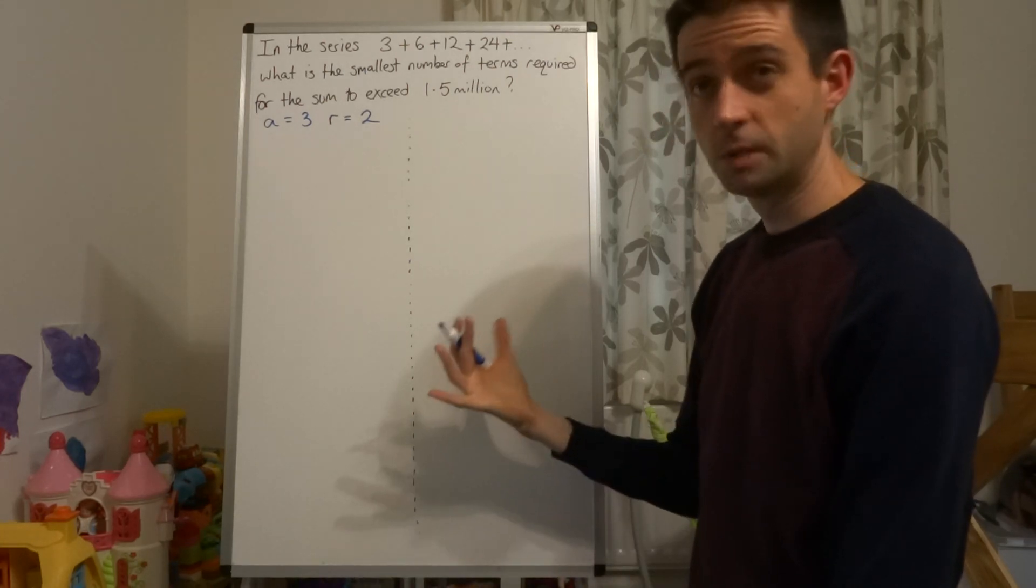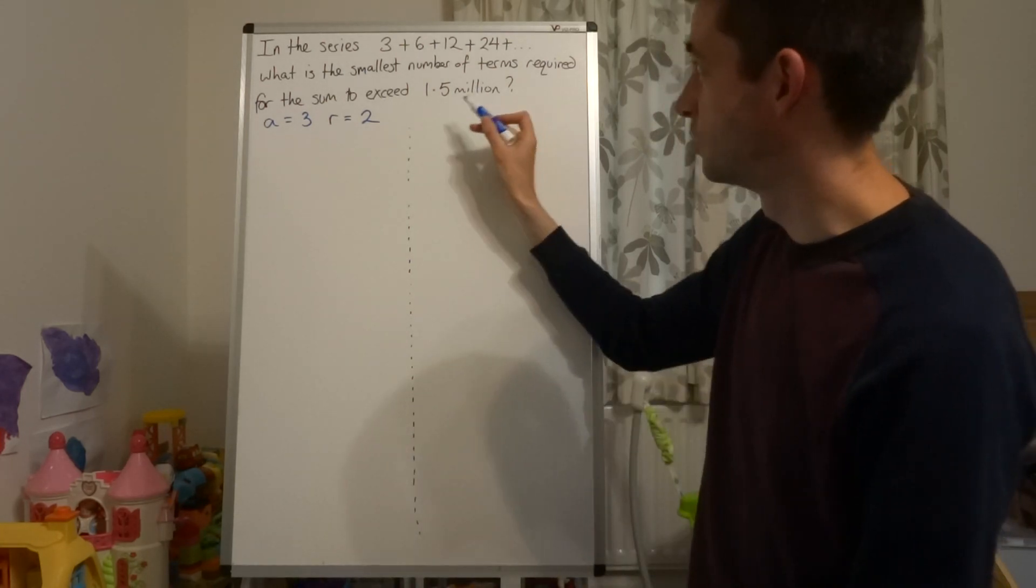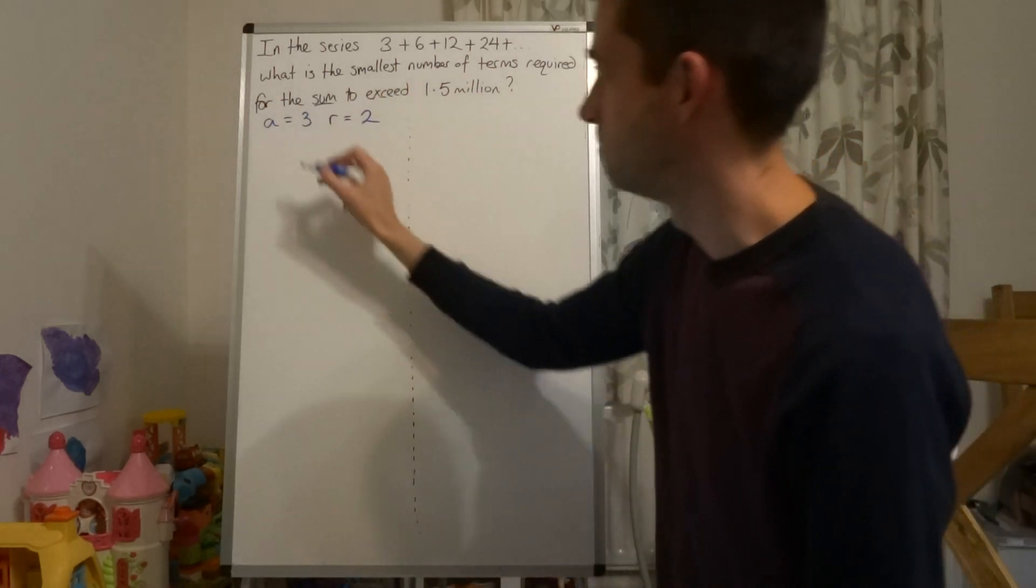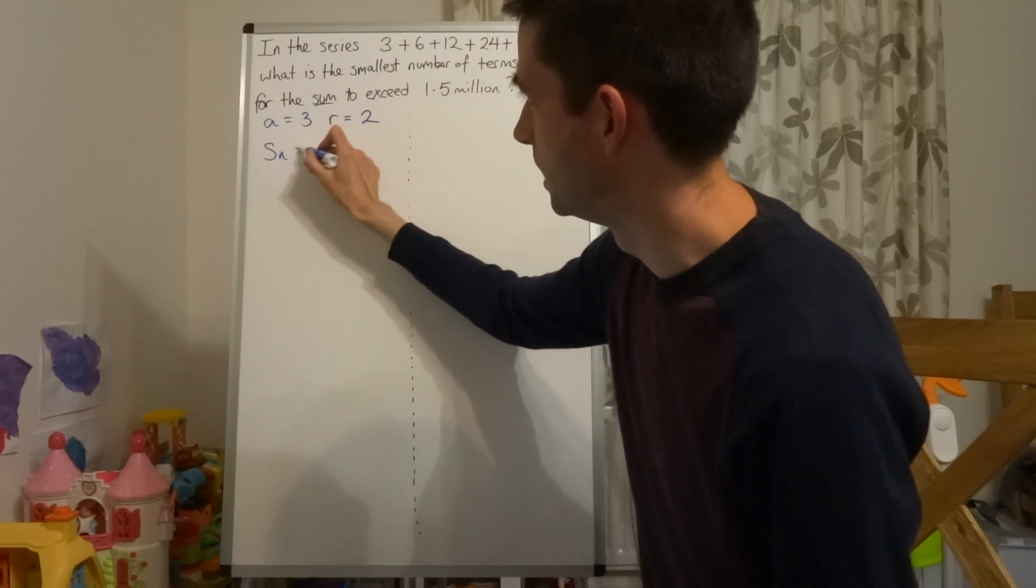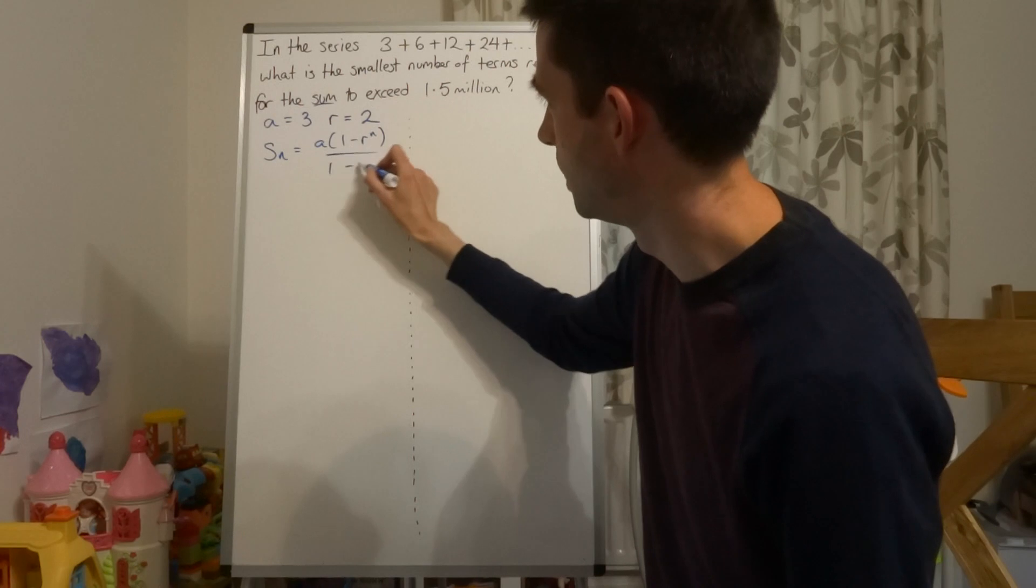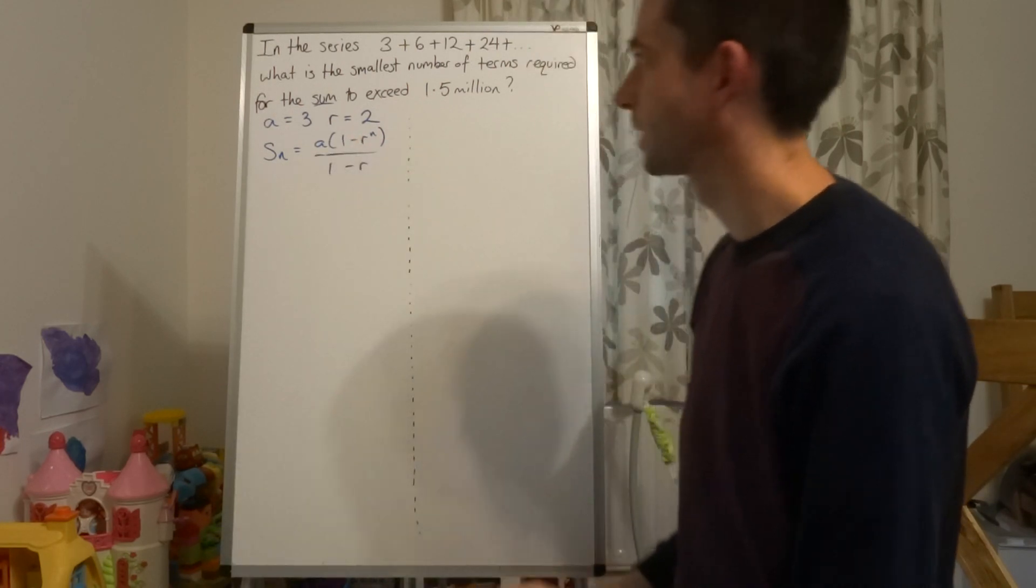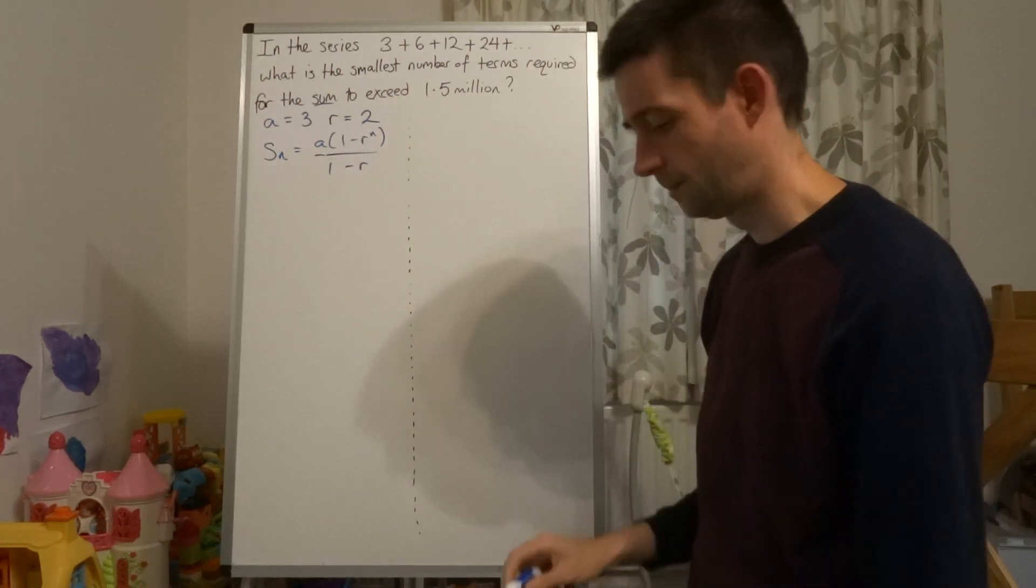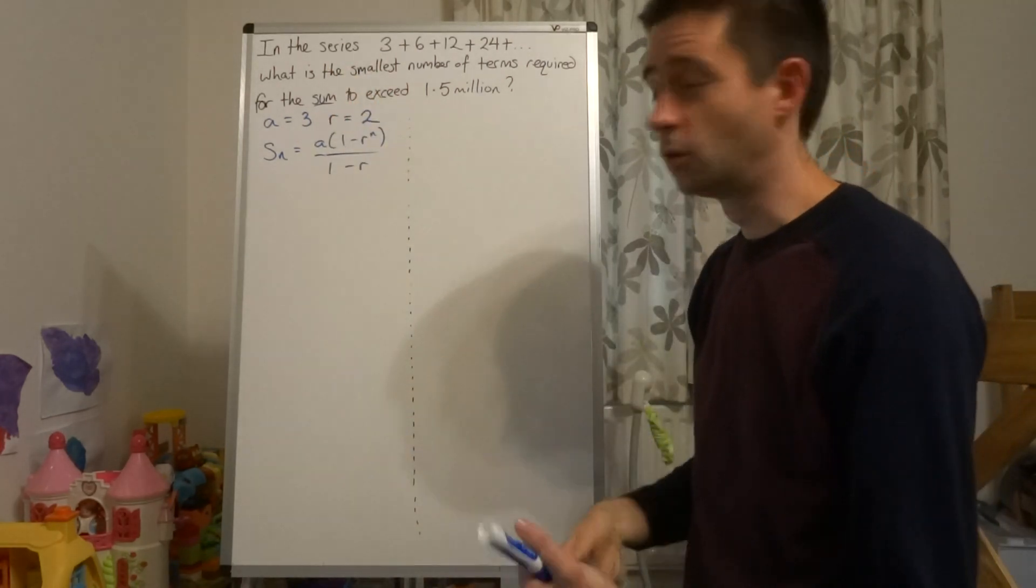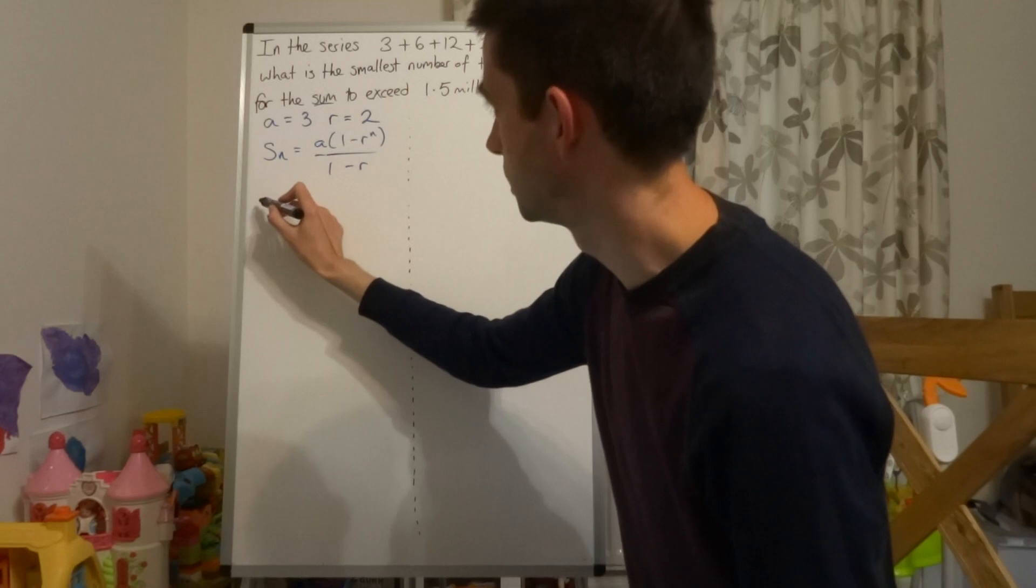Now, we're being asked about a sum, so the smallest number of terms required for the sum to exceed 1.5 million. So we're going to be using the formula sum to n equals a times 1 minus r to the n over 1 minus r. So let's begin by using that formula with the values that we know.